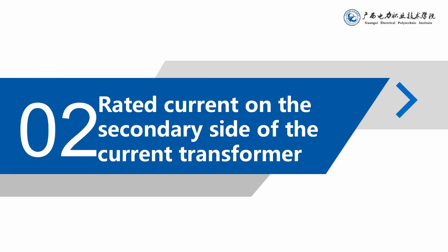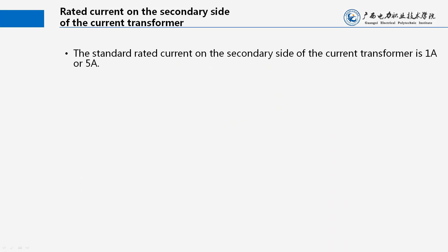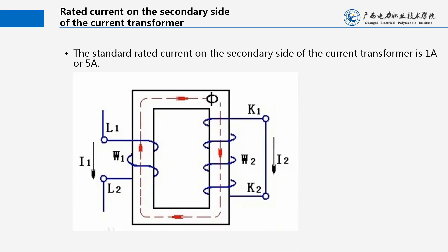Rated Current on the Secondary Side of the Current Transformer. The standard rated current on the secondary side of the current transformer is 1A or 5A.